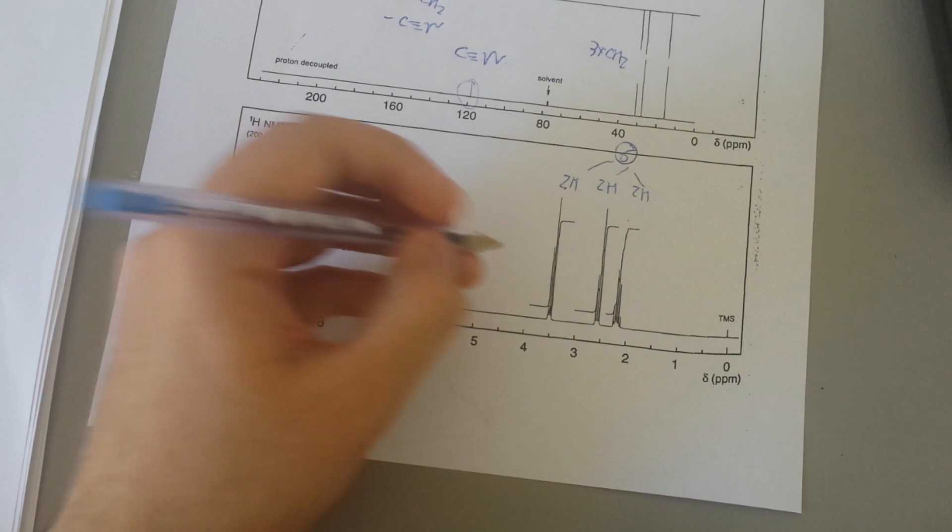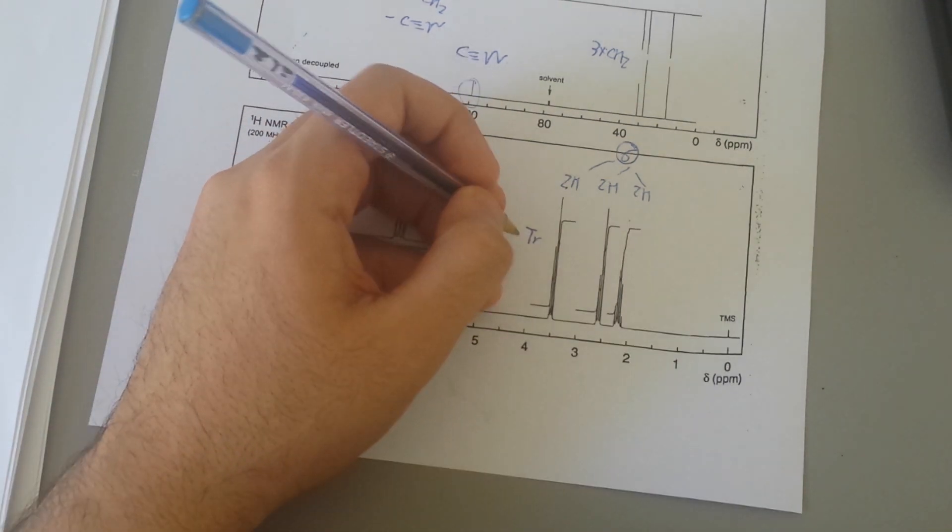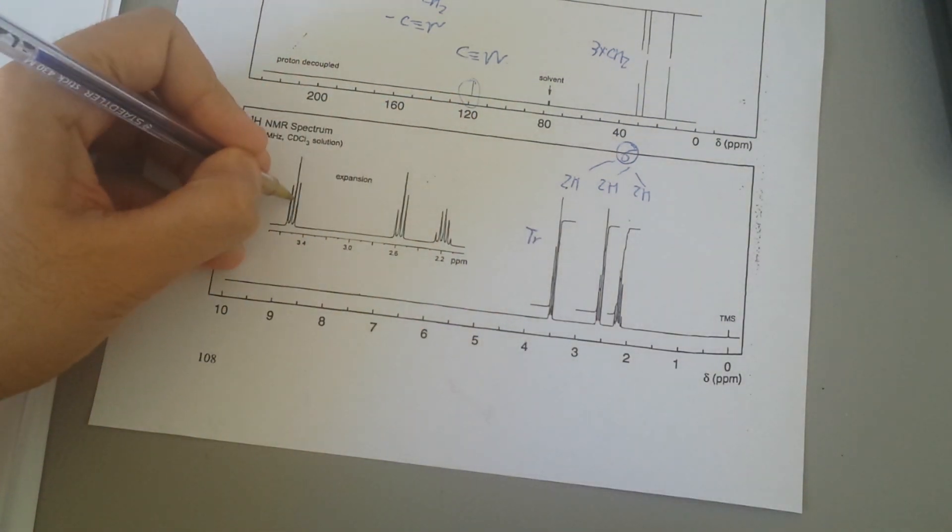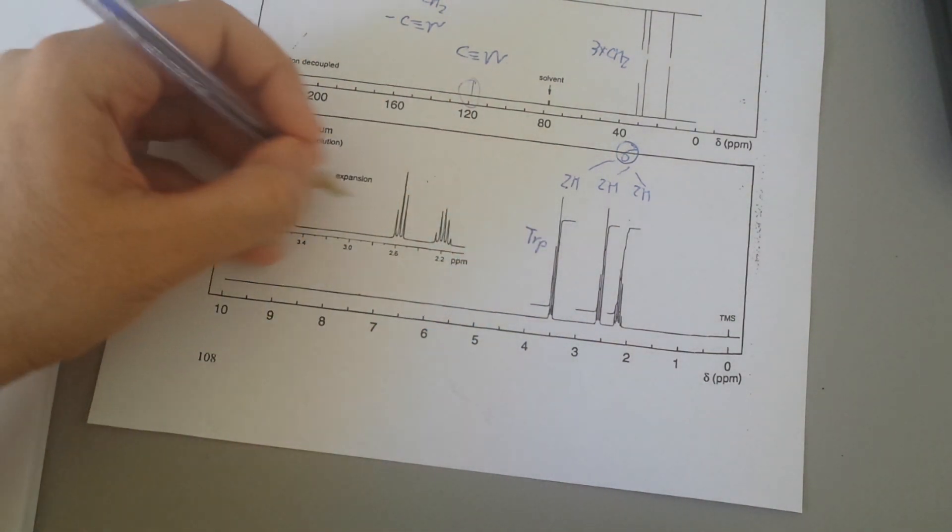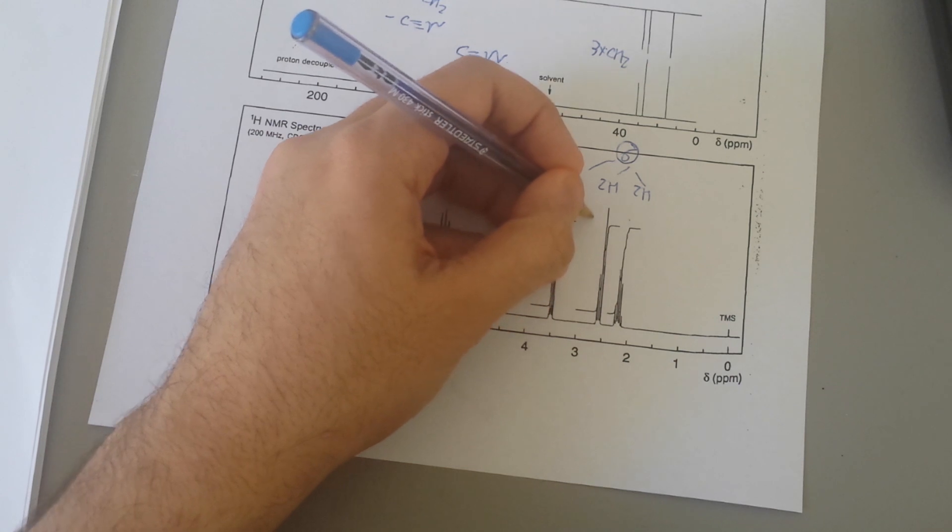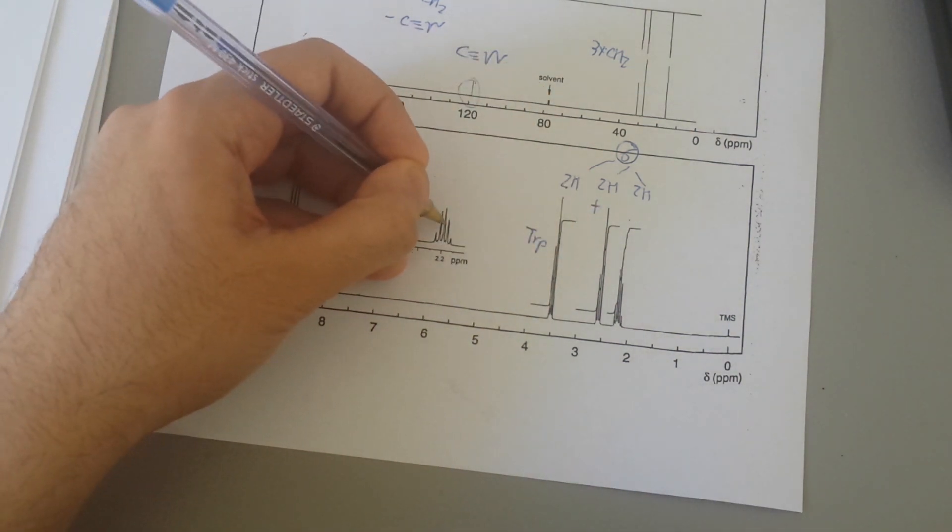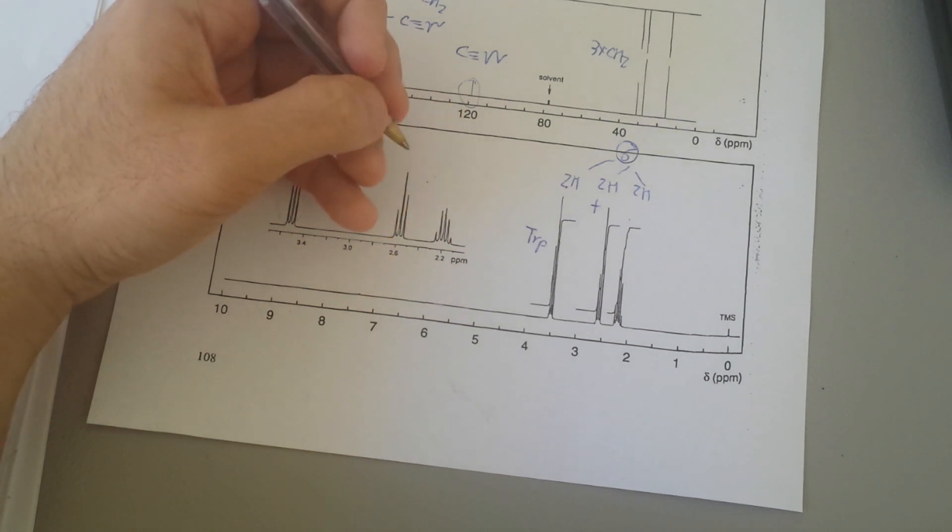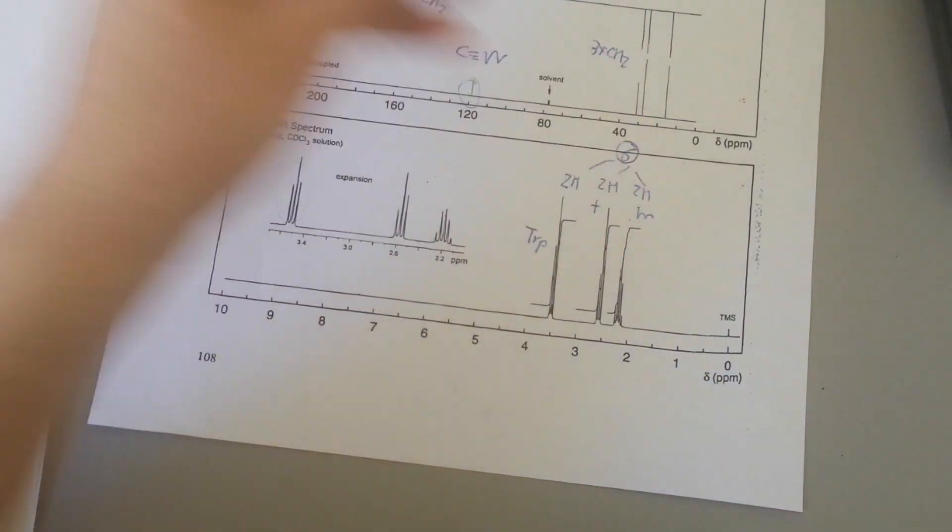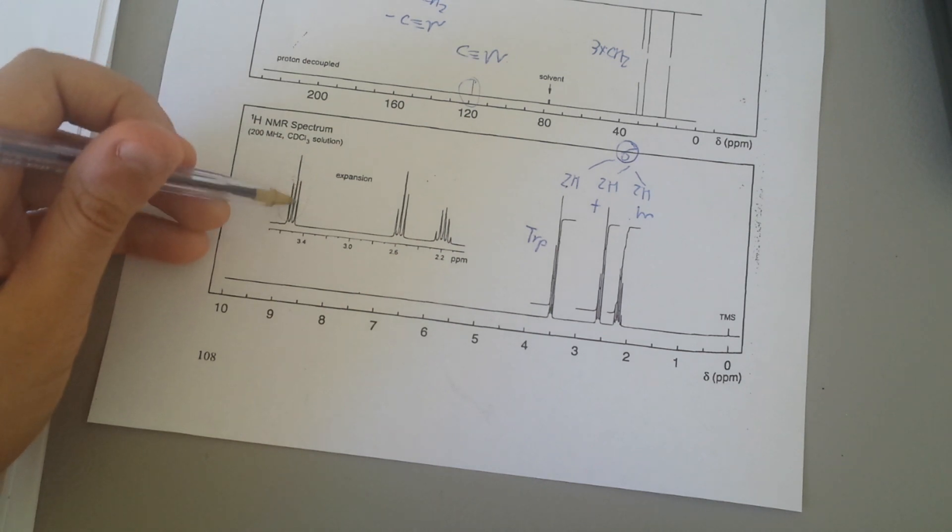So here it is triplet. So here is triplet, because we're given 3. So it's a triplet. Here again is triplet. Here it's 5 which is called multiplet. You can say pentet, but usually go with M.